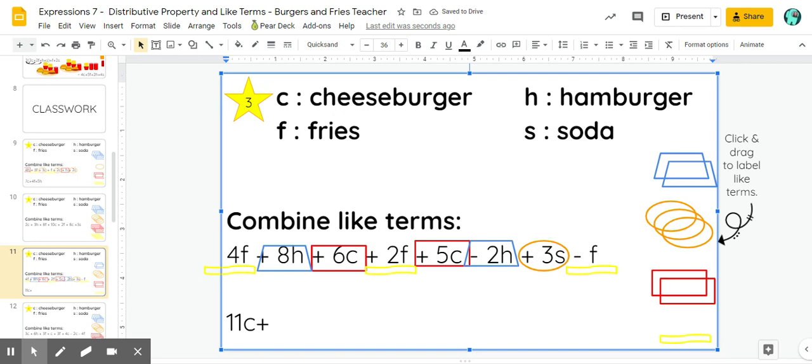And then I'm going to look for my fries next. I have four plus two, which is six, minus one. So if there's no number in front, it's like a one. So five fries altogether.